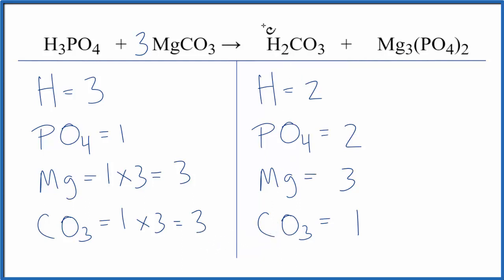We could put a three in front of the H2CO3, two times three, that'd give us six hydrogens. Then one times three, that would give us three carbonates. So those are balanced.